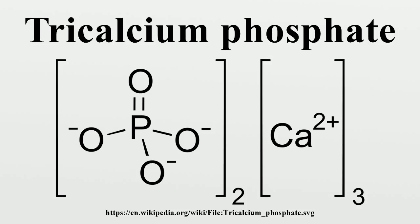Beta tri-calcium phosphate has a crystallographic density of 3.066 g/cm³, while the high-temperature forms are less dense. Alpha tri-calcium phosphate has a density of 2.866 g/cm³ and alpha-prime tri-calcium phosphate has a density of 2.702 g/cm³. They all have complex structures described as containing columns of cations and anions. The beta form has two types of columns, each containing calcium and phosphate ions. The high-temperature forms each have two types of columns — one containing only calcium ions and the other both calcium and phosphate.